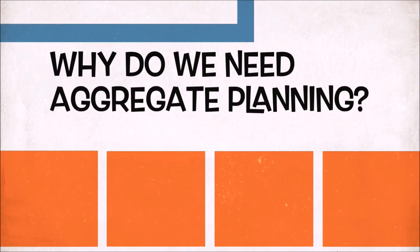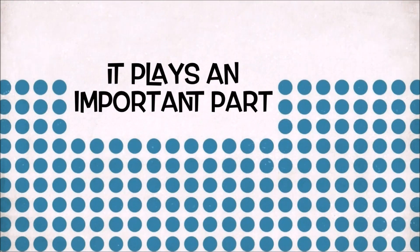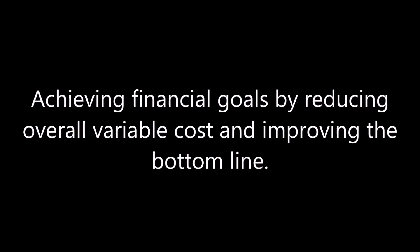So why do we need Aggregate Planning? Why is it important? Aggregate Planning plays an important part in achieving long-term objectives of the organization. Aggregate Planning helps with the following: achieving financial goals by reducing overall variable cost and improving the bottom line; maximum utilization of the available production facility; providing customer delight by matching demand and reducing wait time for customers; reducing investment in inventory stocking; and being able to meet scheduling goals, thereby creating a happy and satisfied workforce.